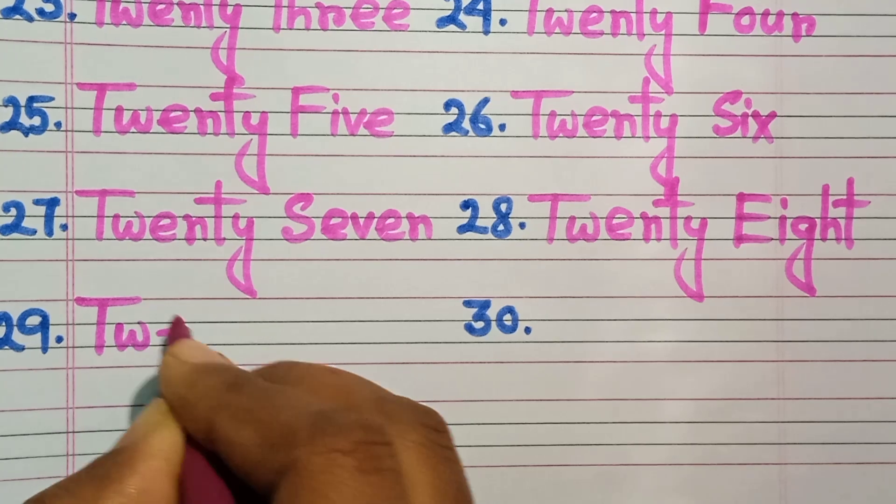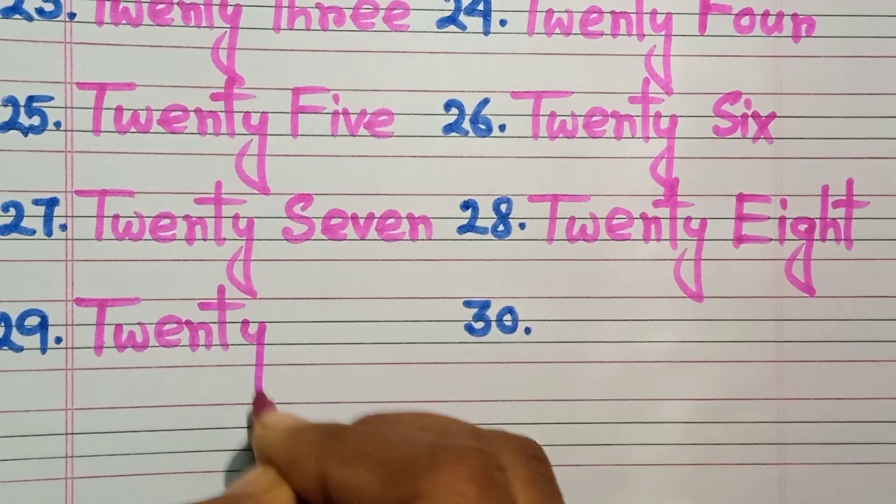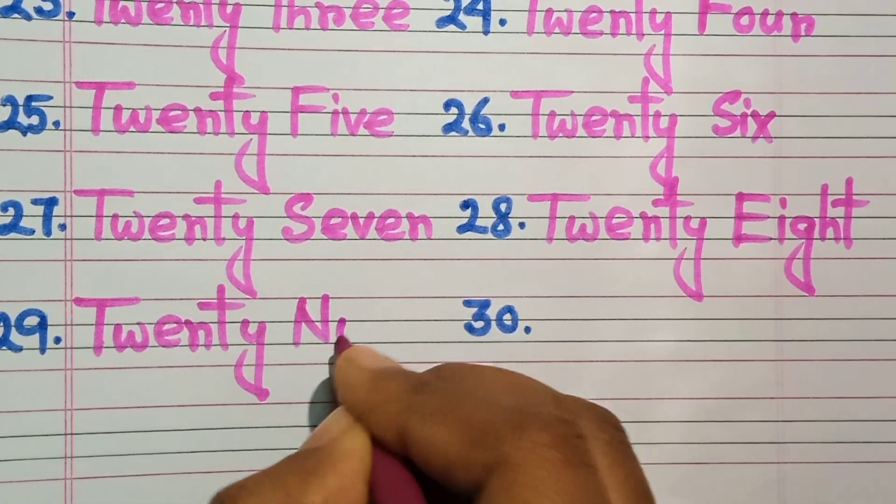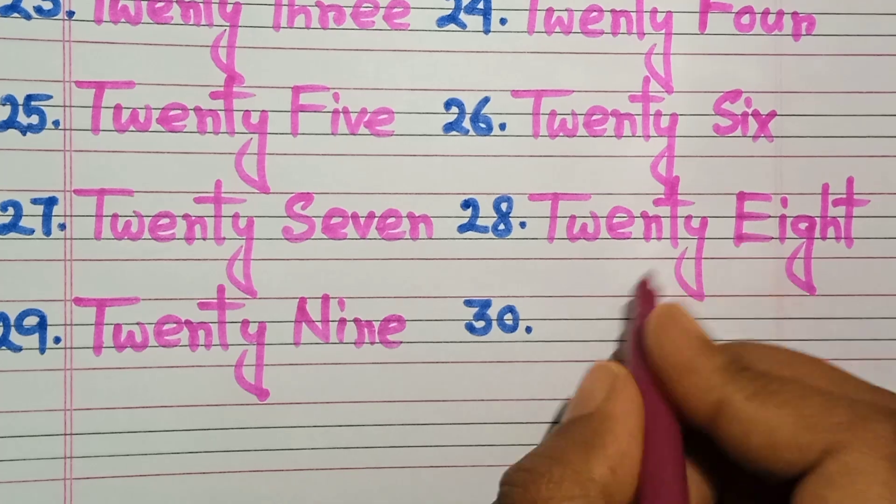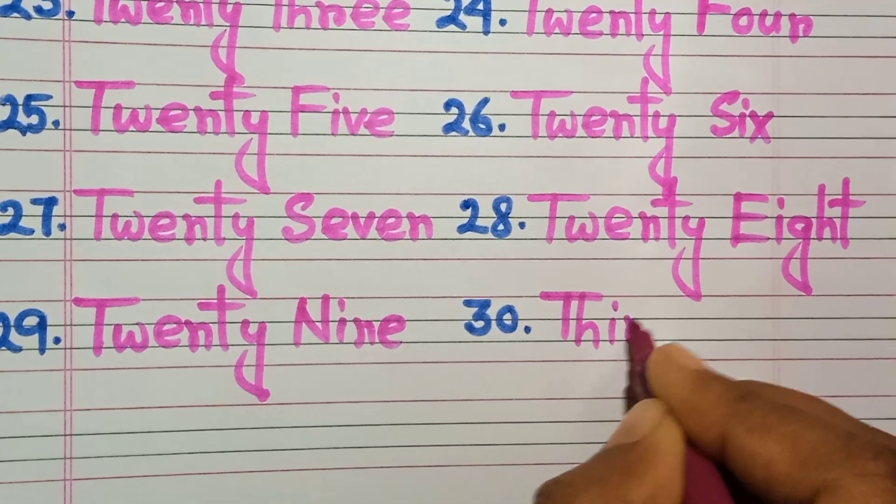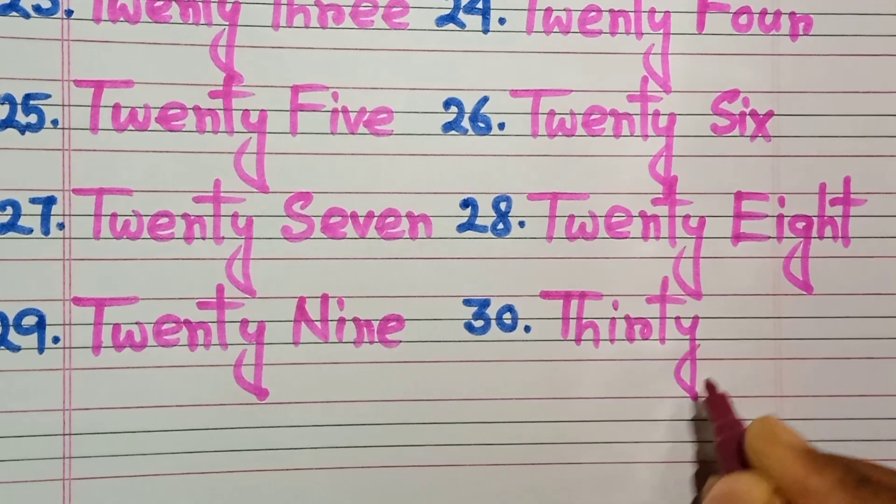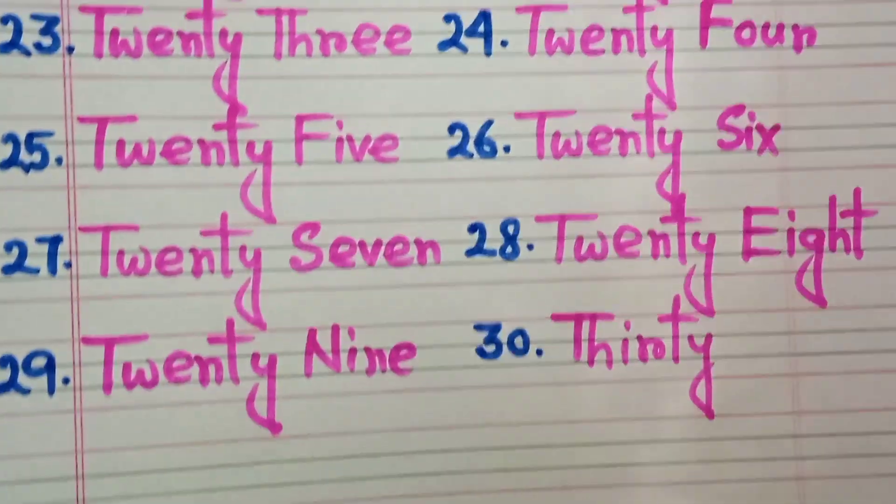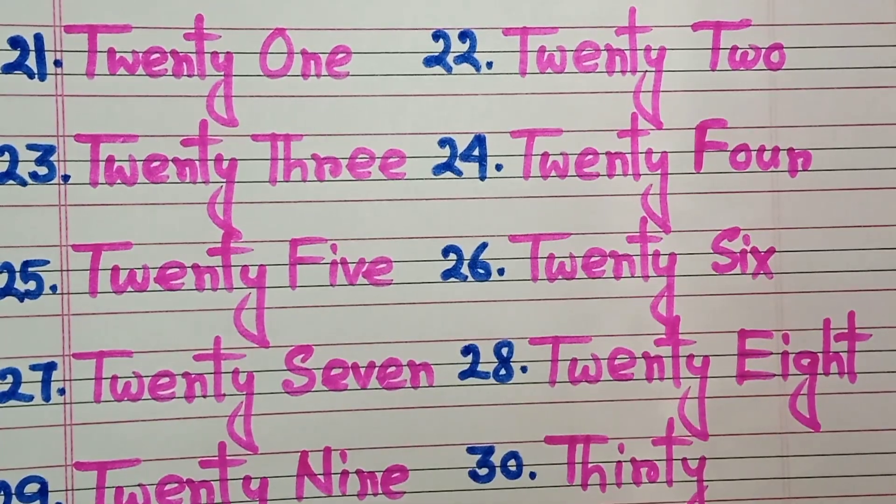29. Twenty-nine. T-W-E-N-T-Y, twenty. Nine, N-I-N-E, 29. 30. Thirty. T-H-I-R-T-Y, thirty. So please subscribe the channel. Thank you.